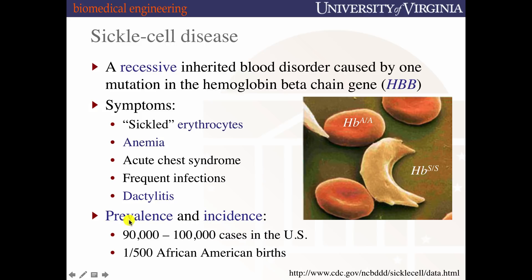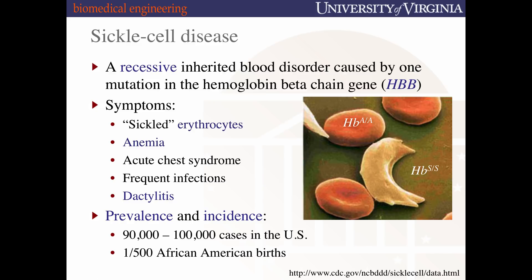Regarding prevalence and incidence: prevalence refers to how many people are affected — about 90,000 to 100,000 cases in the United States. Incidence is a probability statement about how likely someone is to get the disease — about 1 in 500 African American births. We'll talk at the end about why this particular population is susceptible.